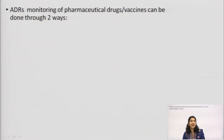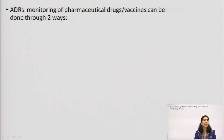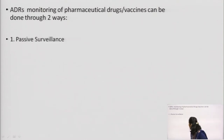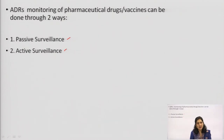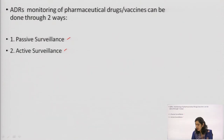ADR monitoring — that is, adverse drug reaction monitoring of pharmaceutical drugs or vaccines — can be done through two ways. One is passive surveillance, and the second one is active surveillance. Any drug or vaccine can produce an adverse drug reaction, and its monitoring is done through passive surveillance as well as active surveillance. My topic will be focusing on passive surveillance in this video.